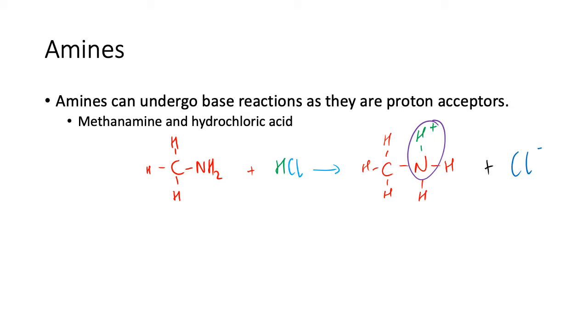So it accepts protons in just the way that it reacts with acids - that could be acids in solution or acids in gaseous form and things like that. How do we name this particular organic product? The positive ions of amines are called alkyl ammonium ions.